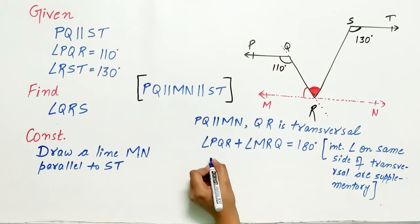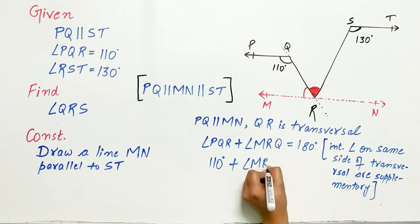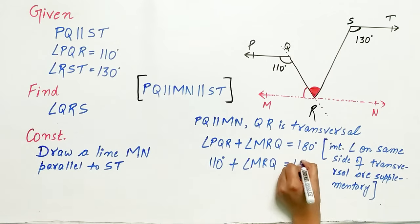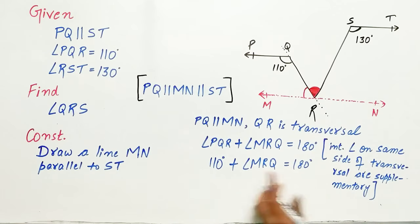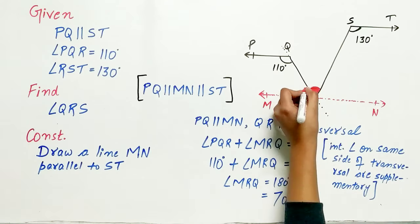Angle PQR is 110 degrees. Angle MRQ is 180 degrees minus 110 degrees which equals 70 degrees. Hence angle MRQ is 70 degrees.